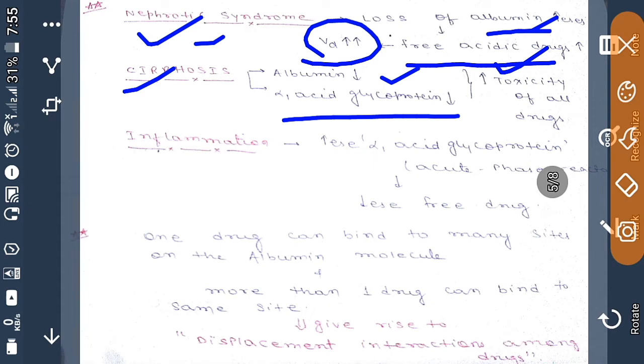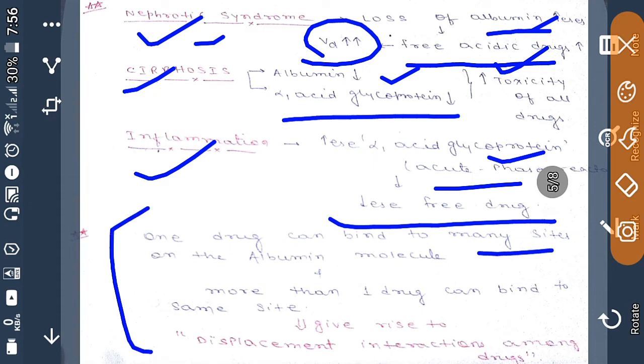If there is any inflammation, then in inflammation alpha-1 acid glycoprotein increases because it is an example of acute phase reactant. It will lead to decrease in free drug.